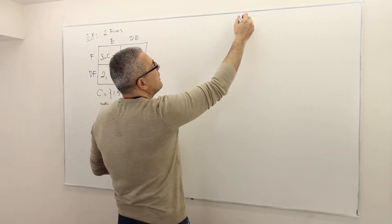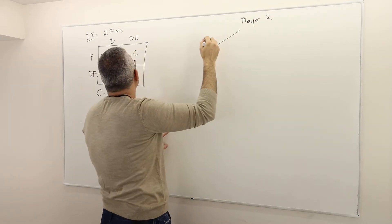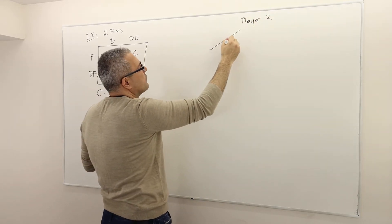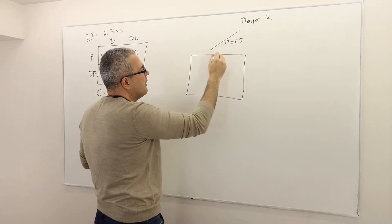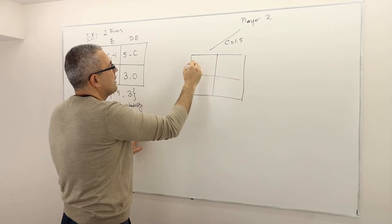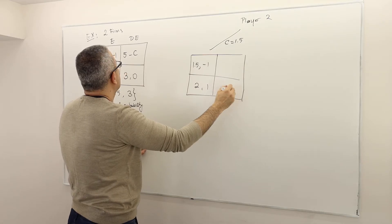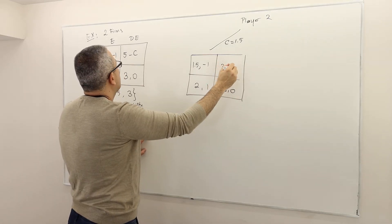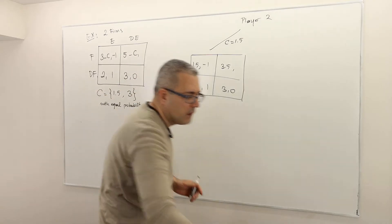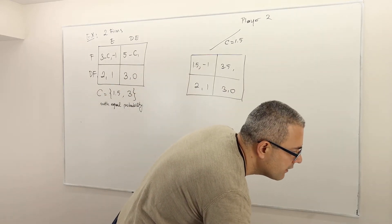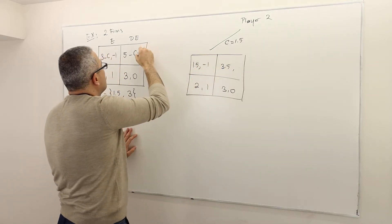Because you'll see, player 2 — if I draw this thing again — is going to assume: if C is equal to 1.5, he knows that this is the game where the payoffs are 1.5, -1; 2, 1; 3, 0; and this is 3.5, 5 minus C... sorry, I forgot that payoff. It is 0.